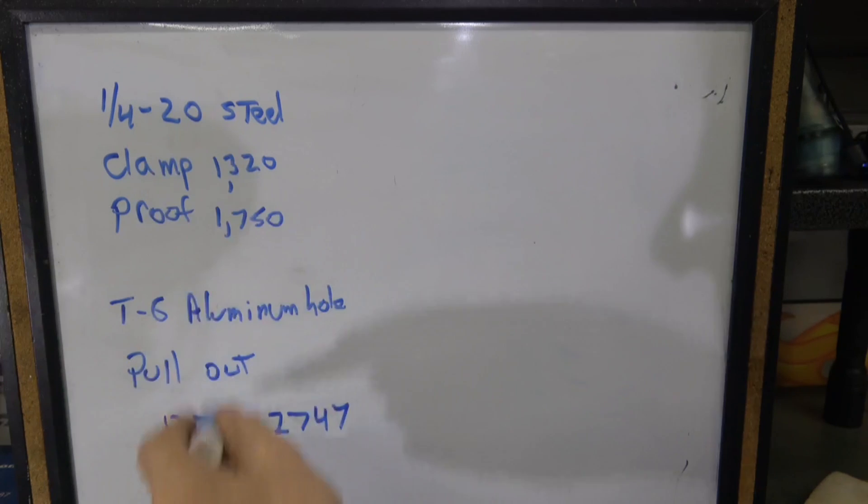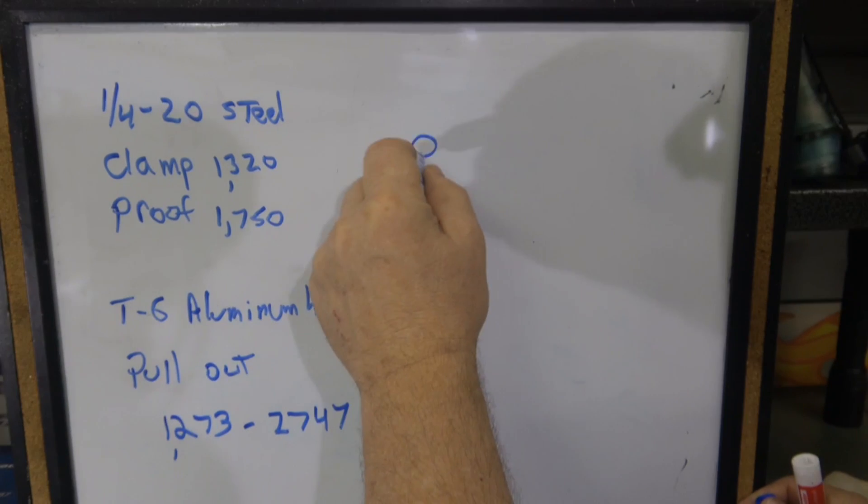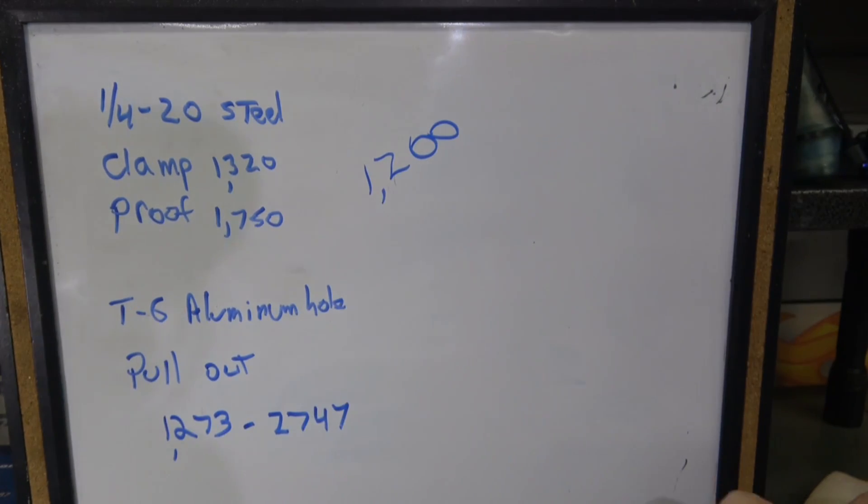Let's assume that the pull out strength for either one of the threads, that's the point where the threads would fail and the fastener or the stud, carb stud, would pull right out of the manifold. Let's just say it's 1,200. Let's just stick to 1,200 for a second.